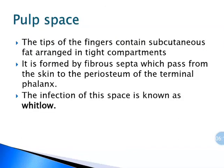There is another important space present in the tips of the fingers. The tips of fingers contain subcutaneous fat arranged in very tight compartments, bounded by fibrous septa which pass from the skin to the periosteum of the terminal phalanx.